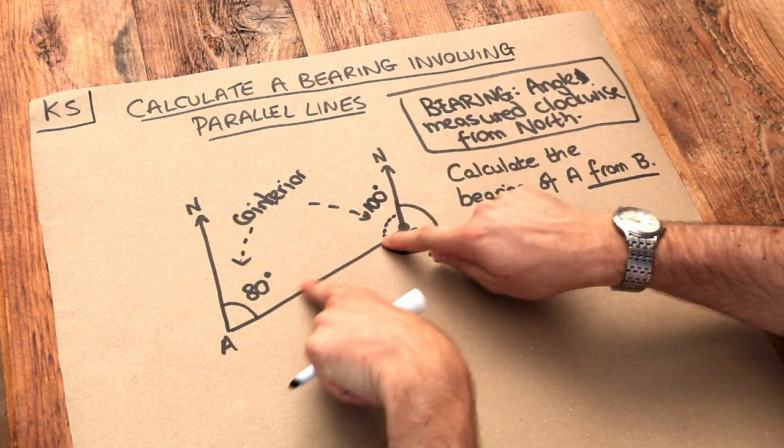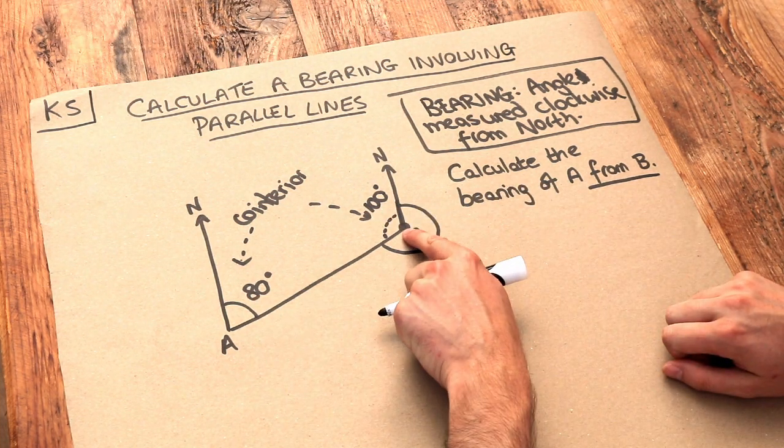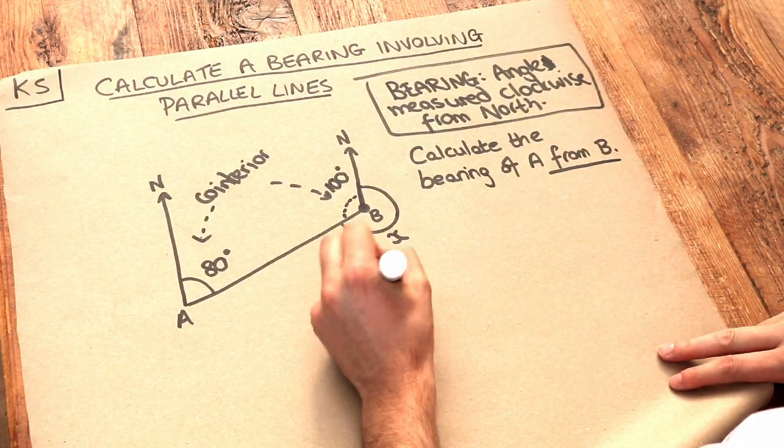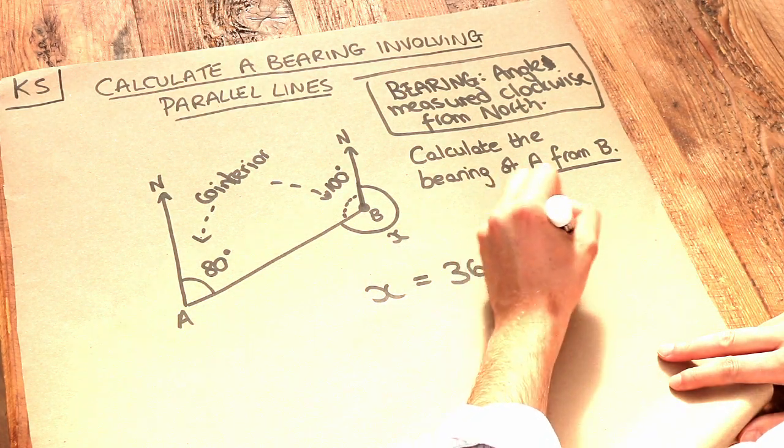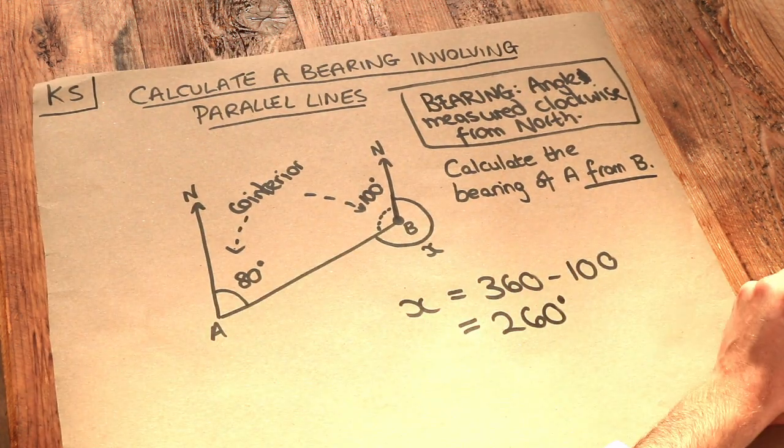So those two angles, the C angles, the co-interior angles add up to 180. And now look, angles around a point sum to 360. So to get X, we just do 360 subtract that other angle there, and that gives us a bearing of 260 degrees.